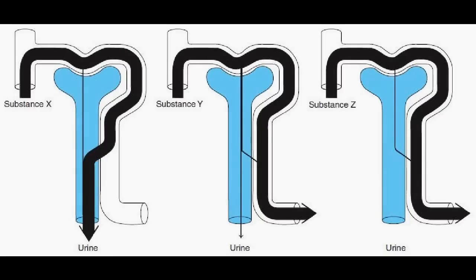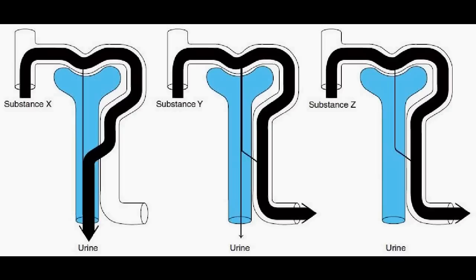Now, here are some examples of transport. I recommend pausing to figure them out on your own, and then we can go through them together. Substance X is filtered and then secreted completely — this would be a good example of PAH. Substance Y is filtered and then reabsorbed, but some of it is also excreted — this would be a good example of sodium, potassium, or urea. Substance Z is filtered and then reabsorbed completely — this would be a good example of glucose or bicarbonate.